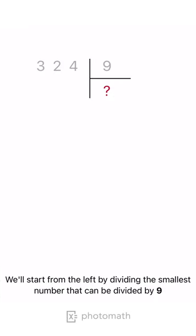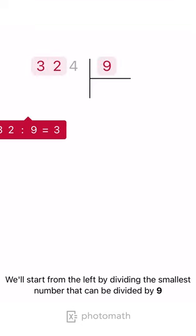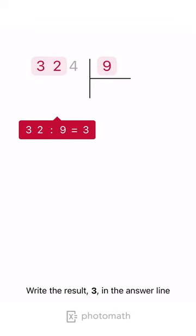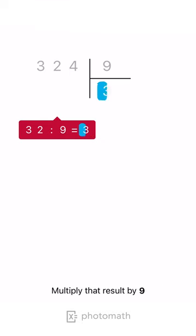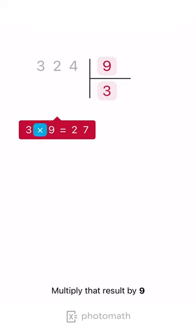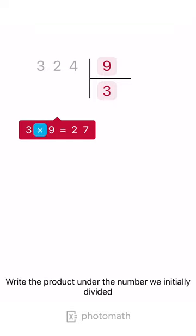We'll start from the left by dividing the smallest number that can be divided by 9. Write the result, 3, in the answer line. Multiply that result by 9. Write the product under the number we initially divided.